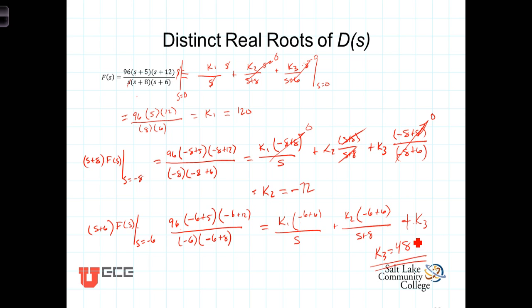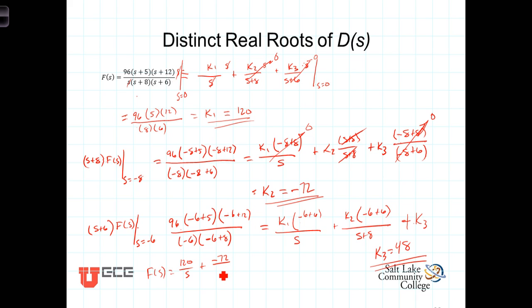We now have all three constants and can write f of s in its expanded partial fraction form. It is k1 over s — we found k1 to be 120 over s — plus k2 over s plus 8, where k2 is negative 72 over s plus 8, plus k3, which we found to be 48 over s plus 6.